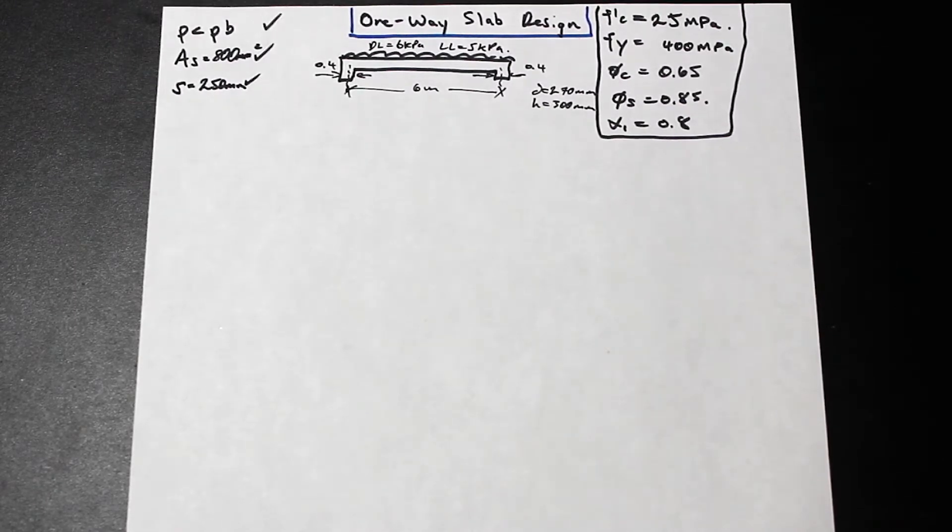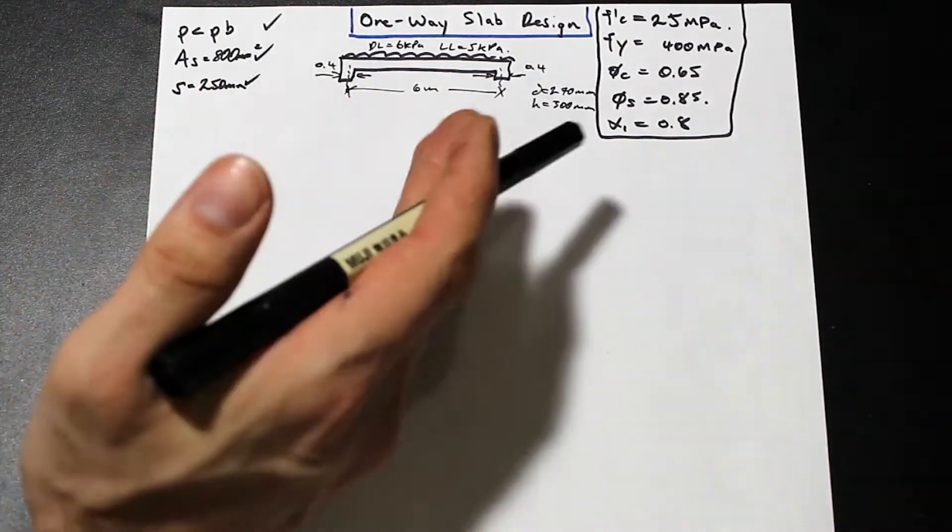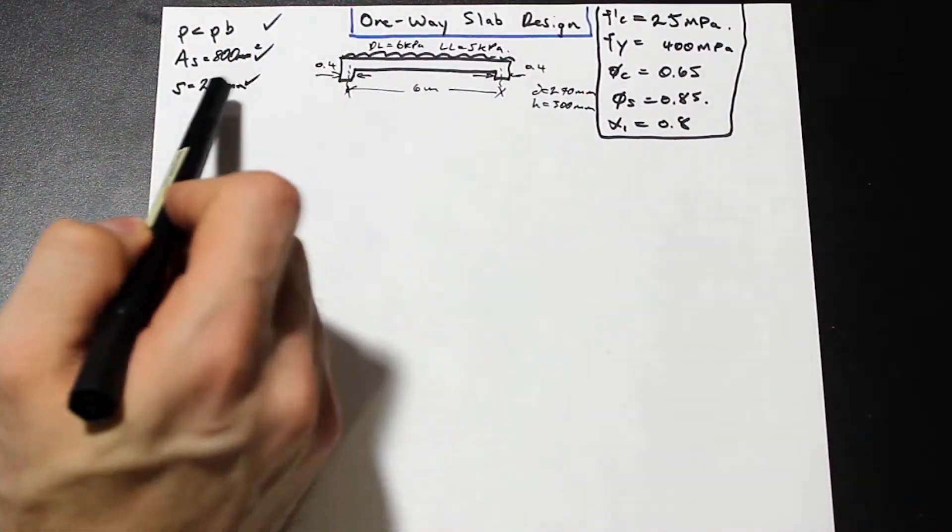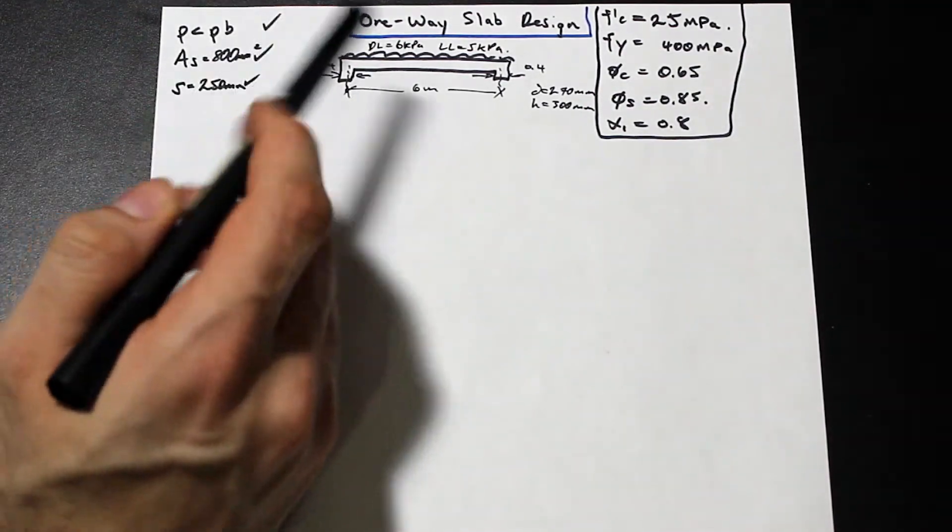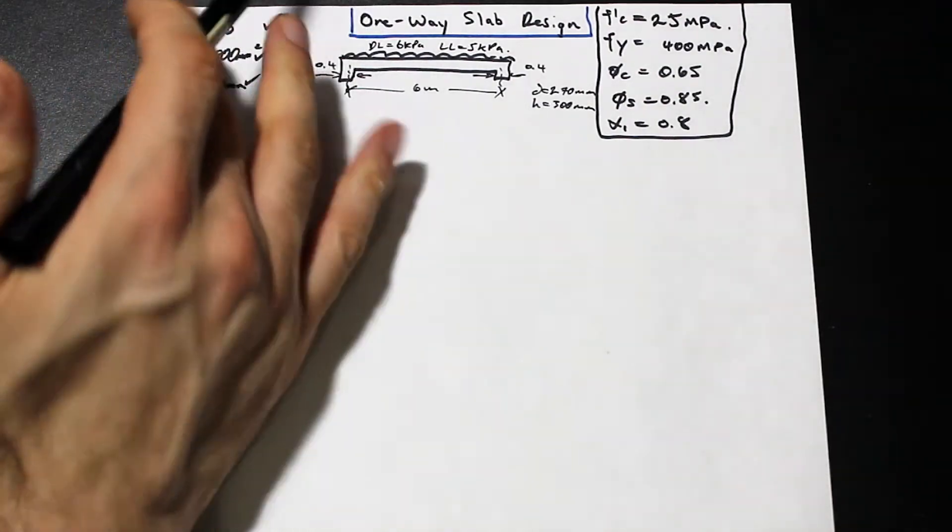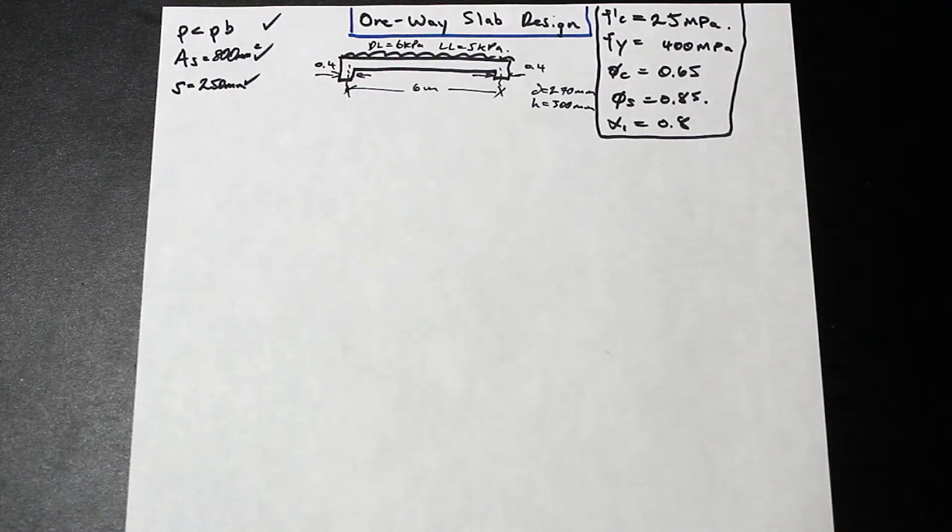In the last video we finished after we calculated the area of steel that we needed and the spacing. We calculated the area of steel as 800 millimeter squared per meter strip in the short direction, then we calculated the spacing based on Canadian code requirements. We also checked that we have a steel controlled failure with this amount of steel, which we had. Next step is going to be verifying that our spacing of the bars is within acceptable limits according to the code.